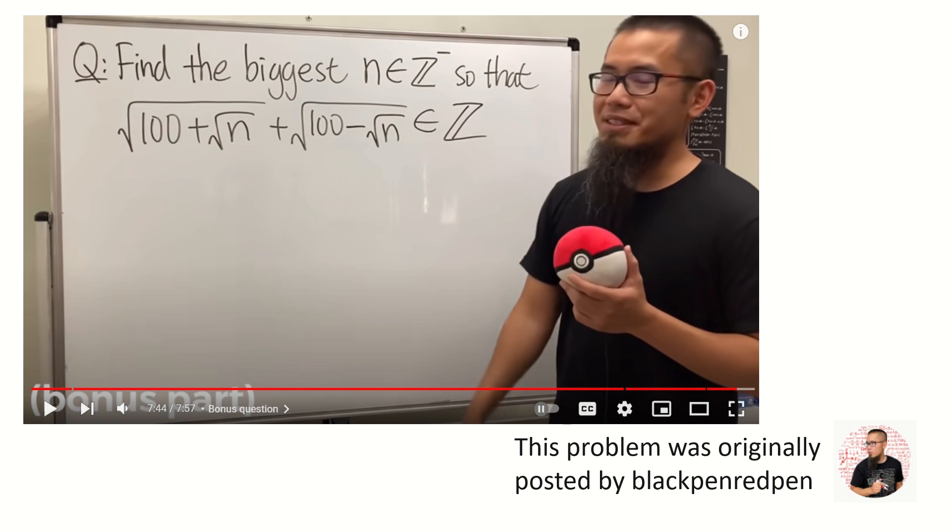We want to solve for the largest negative integer n such that the whole expression gives an integer. I put the link for that video in the description box so you can see it. Let's get started.